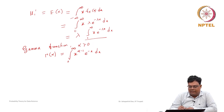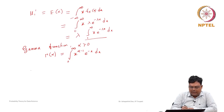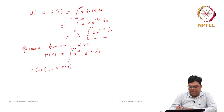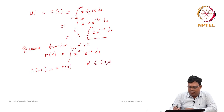In integral calculus, you may have learned that this improper integral is convergent and has a finite value, represented by Gamma(alpha). For any real number alpha > 0, this value is Gamma(alpha). One key property is that Gamma(alpha + 1) can be represented as alpha times Gamma(alpha).